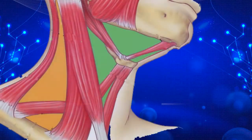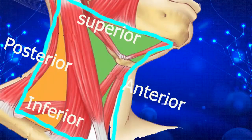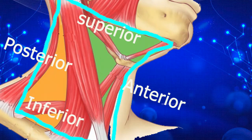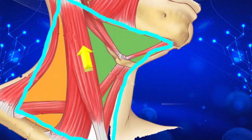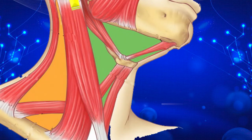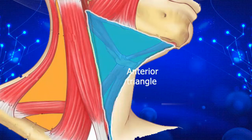Now we are ready to describe the triangles of the neck. A side view of the neck will show a near quadrilateral outline giving four borders. These borders are the superior, inferior, anterior and posterior borders. The passage of the sternocleidomastoid muscle obliquely from the clavicle and sternum to its point of insertion on the mastoid process and the occipital bone divides this quadrilateral space into two main triangles. The triangle in front of this muscle is the anterior triangle and the one behind it is the posterior triangle.